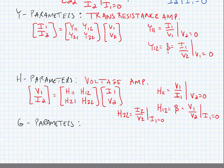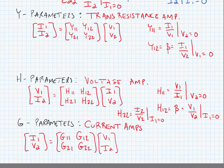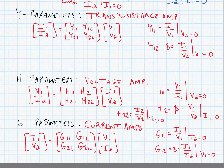Our last set of parameters are called G-parameters. This is another type of hybrid parameter, and they're used for current amplifiers. They're given by the following matrix equation. G11 is the input admittance when the output port is open-circuited — in other words, I1 over V1 when I2 is equal to 0. G12 is our beta term; it's equal to the current gain when port 1 is short-circuited — in other words, I1 over I2 when V1 is equal to 0. We can also find G22, which is the output port impedance, V2 over I2, when the input is short-circuited — in other words, V1 is equal to 0.